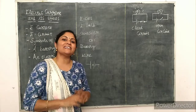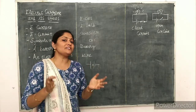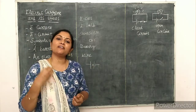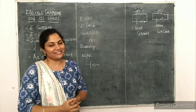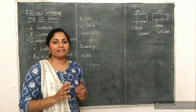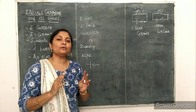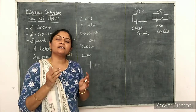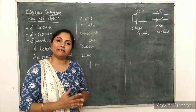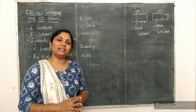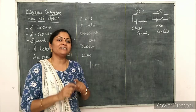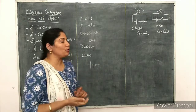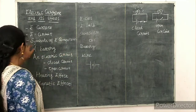Next is electric circuit. Electric circuit means the closed path in which the current can flow. The electric circuit should be a closed path that allows the electric current to pass through it.